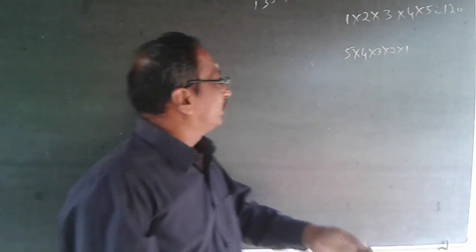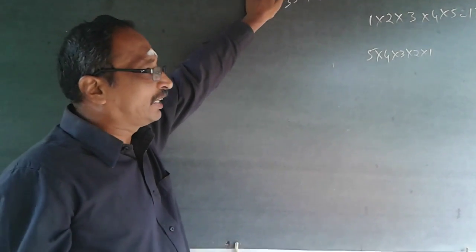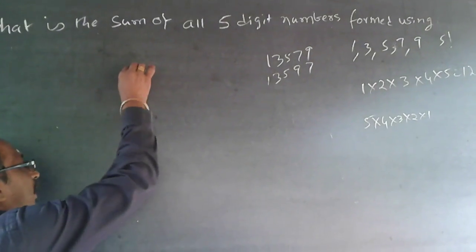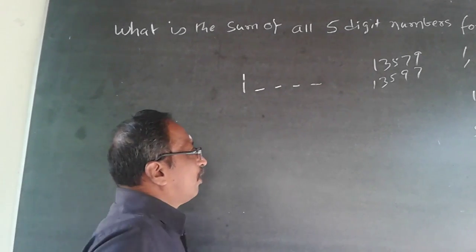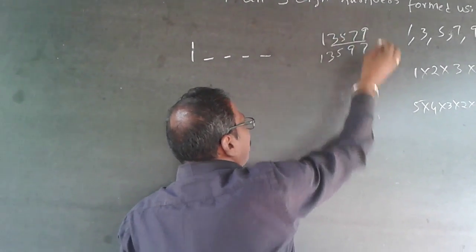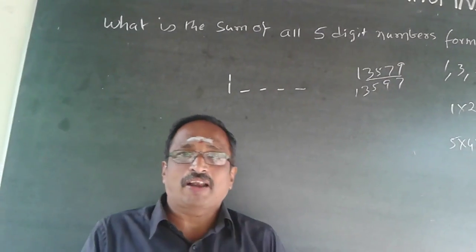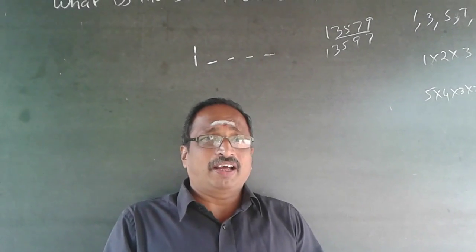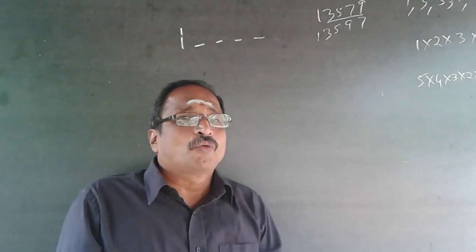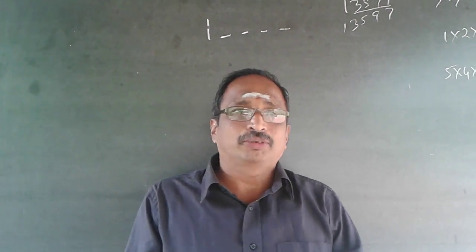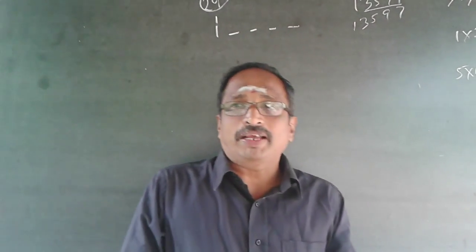In 13579 and 13597, the digit 1 is in the 10,000s place. If I fix 1 in the 10,000s place, I have four remaining numbers — 3, 5, 7, and 9. These four different numbers will rotate 4 factorial times, which is 24. So 1 will be in the 10,000s place exactly 24 times.